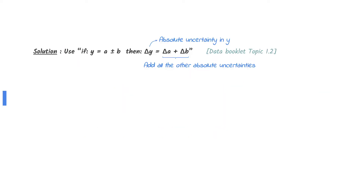Time to know why! In addition and subtraction, absolute uncertainty can be found by adding all the other absolute uncertainties.